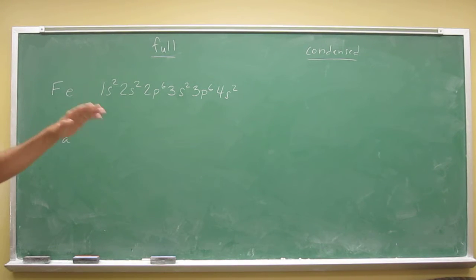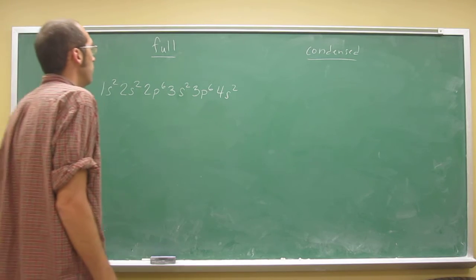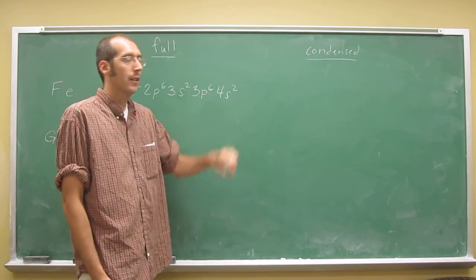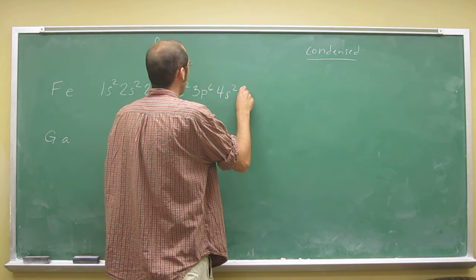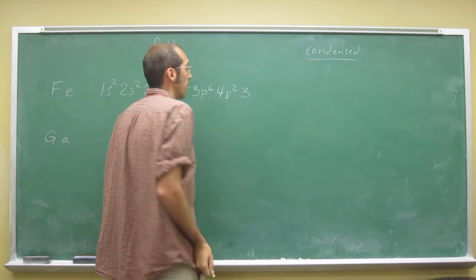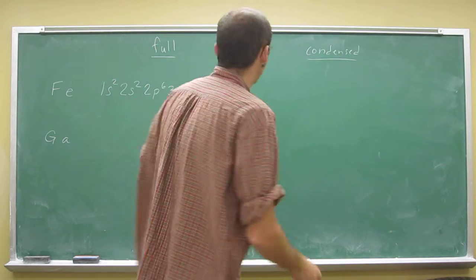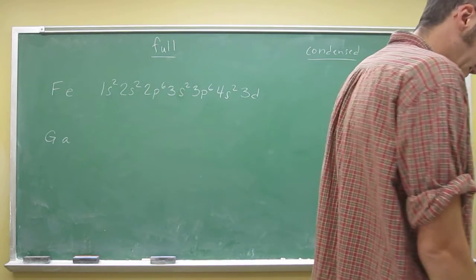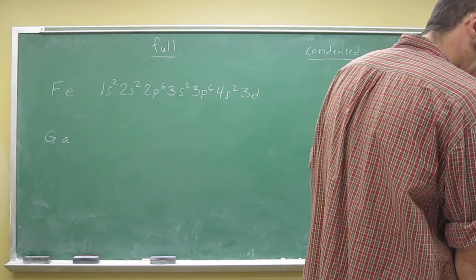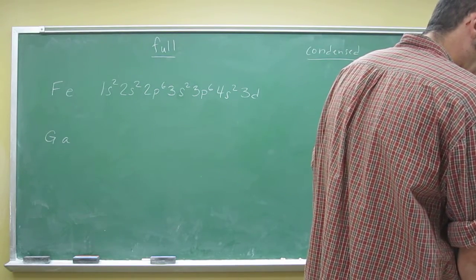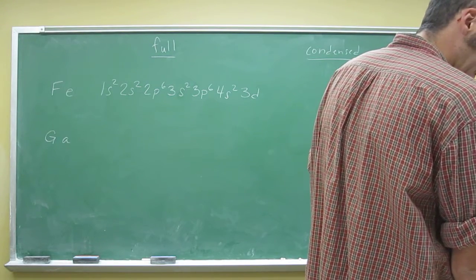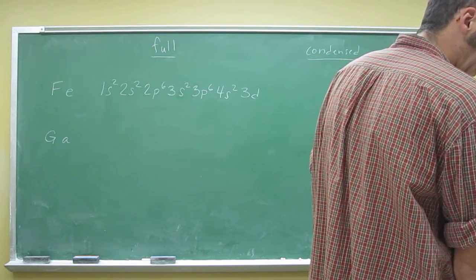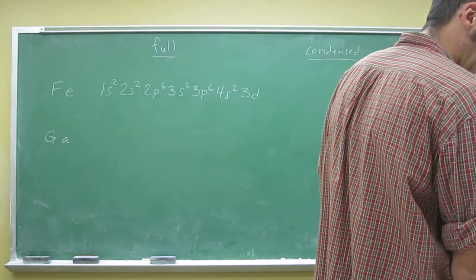But now we get into the transition elements where you actually go back to n equals 3. So you go 3d, so of course that's the d-block. But anyways, then you just count to where iron is: 1, 2, 3, 4, 5, 6.